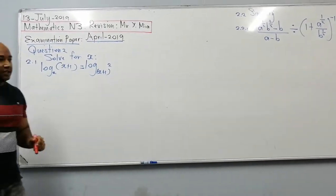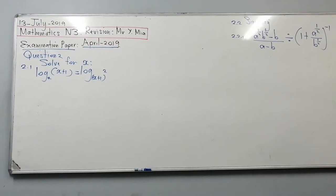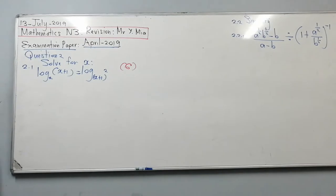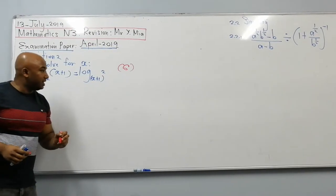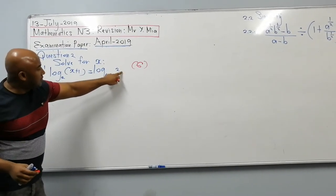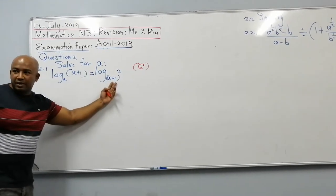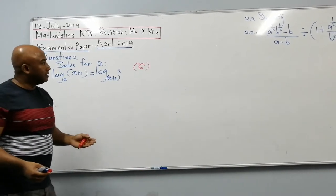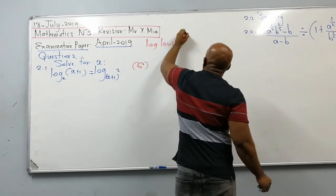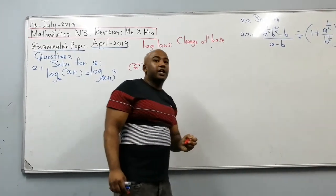Moving on — solve for x. This is a log equation worth 6 marks in the final exam. We have log of x plus 1 to the base 2, plus log 2 to the base x plus 1. Note that x plus 1 is not the base in the first term, but it is the base in the second.